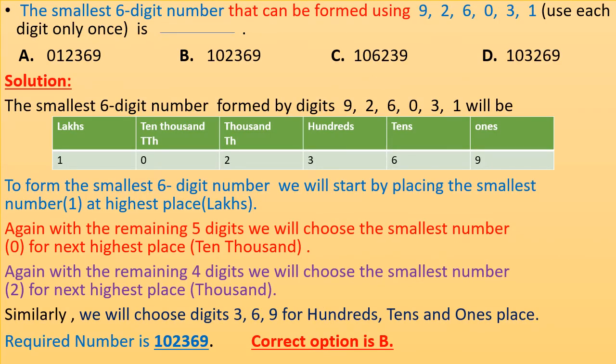The smallest 6-digit number that can be formed using 9, 2, 6, 0, 3, 1, using each digit only once is? To form the smallest 6-digit number, we will start by placing the smallest digits at highest place. The highest place is lakhs and smallest digit is 0, but we cannot start with 0 because it will be a 5-digit number. So we start with 1.